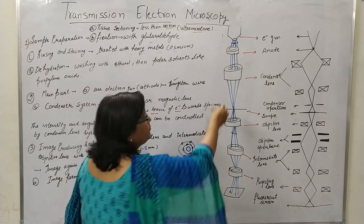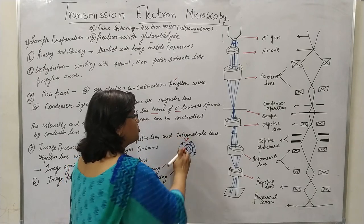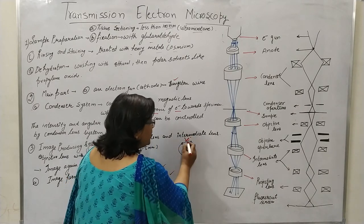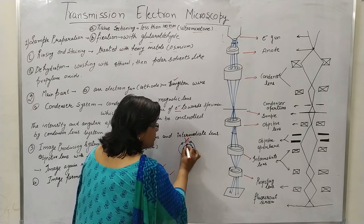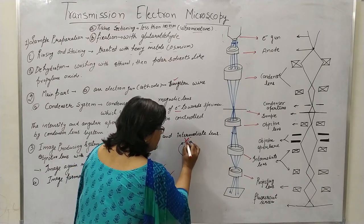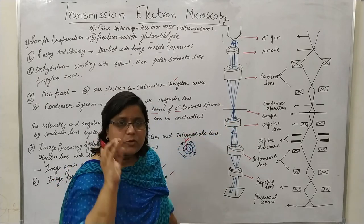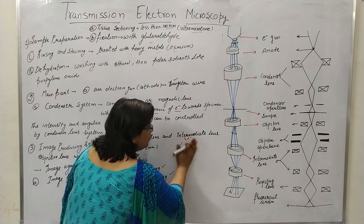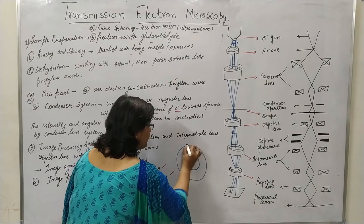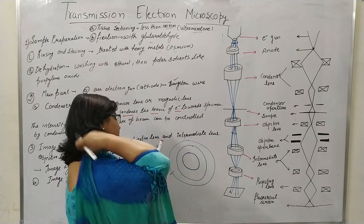Here is our electron beam — what was called the primary electron beam in SEM. These electrons come toward atoms which have a nucleus with electron shells around it. Let me draw this larger so you can see it clearly. I will draw an atom with two or three shells.